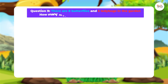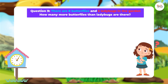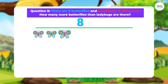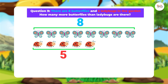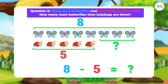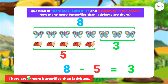Question 9. There are 8 butterflies and 5 ladybugs in the garden. How many more butterflies than ladybugs are there? We subtract 5 from 8. Eight minus 5 equals 3. We answer: there are 3 more butterflies than ladybugs. Notice that to find 'how many more,' we find the difference between the two numbers.